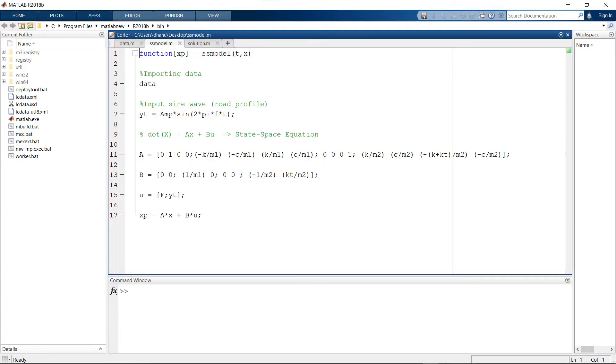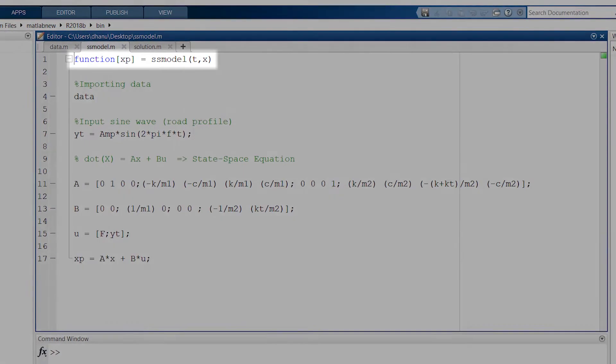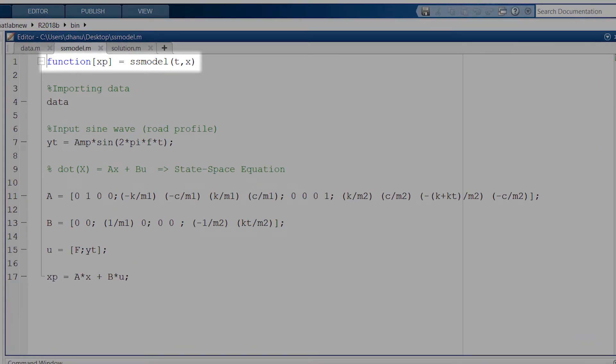In this ss_model file, I have created a MATLAB function to represent our state space model. Function name and the file name should be same otherwise MATLAB will give you an error. I have given time and the state variable matrix as input parameters to the function. XP is the output of the function which is this vector.